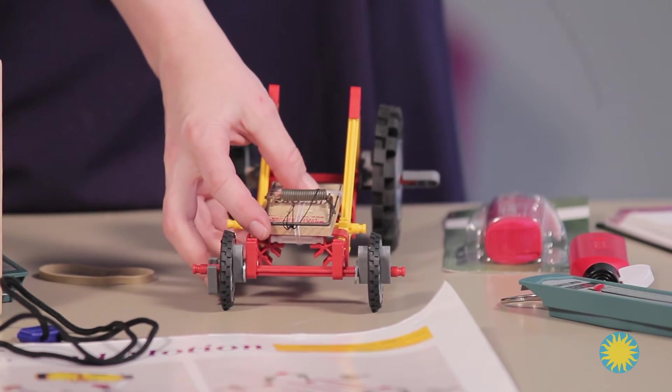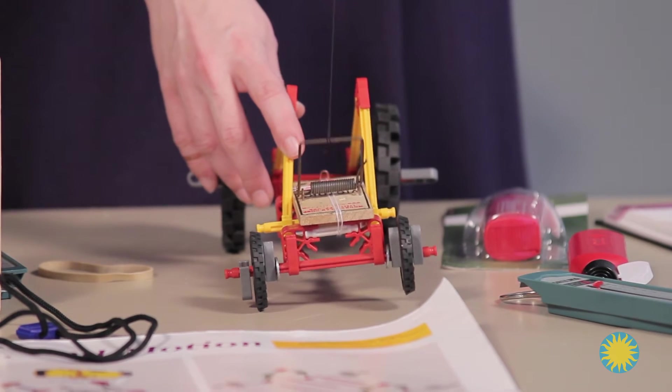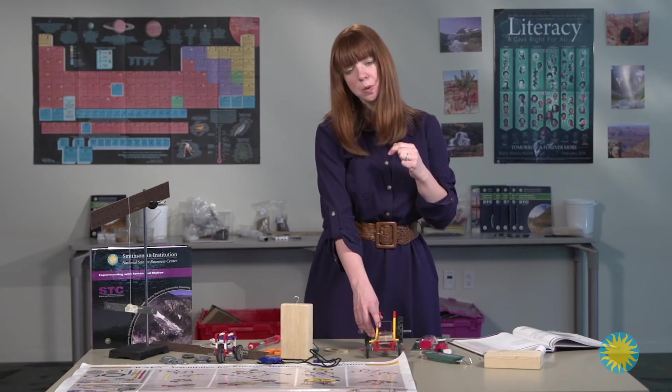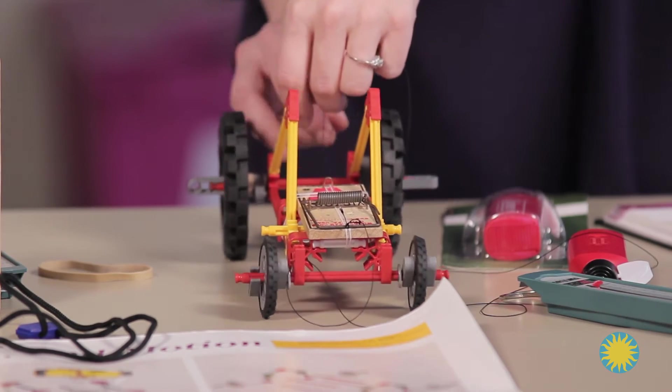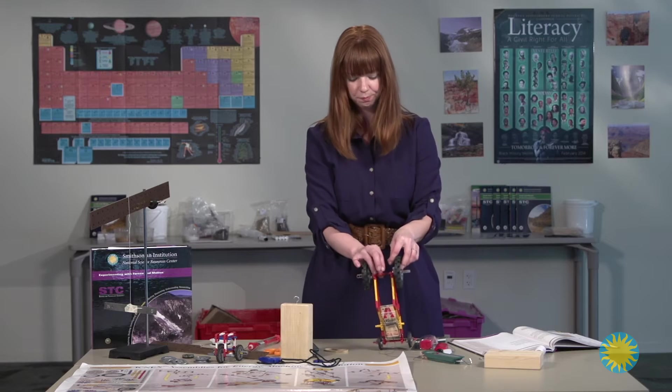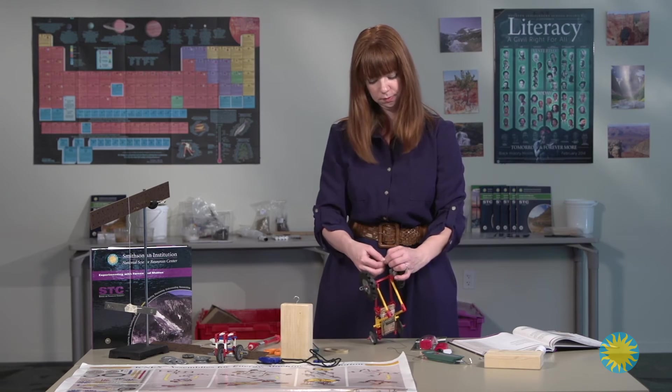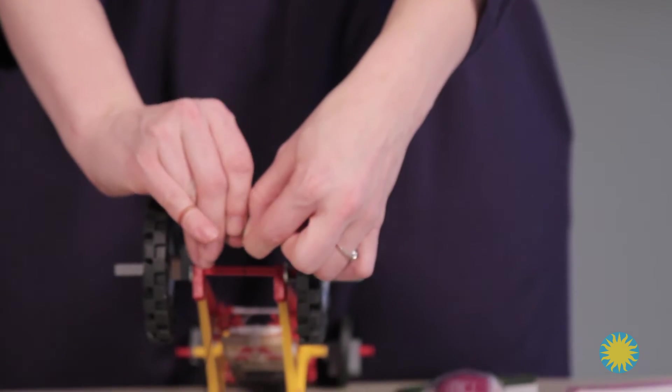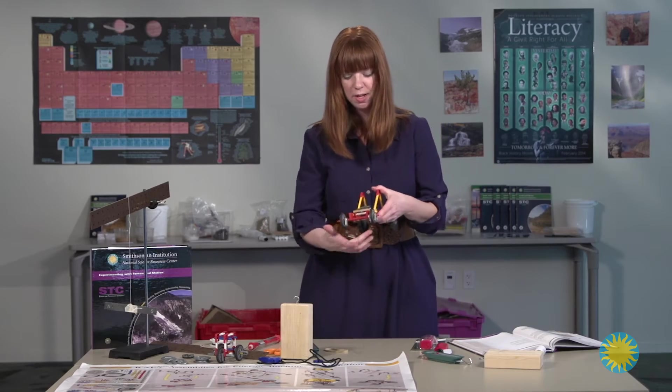So when you pull that loop through, it gives you a way to quickly lift this, because this is what the students are going to be doing with the axles. Once that's in place, the students can take this string and then they do tie it off on the back axle, and then they are ready to go.